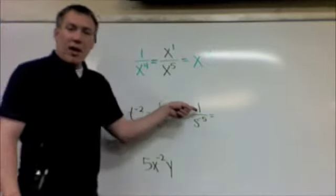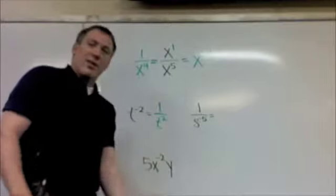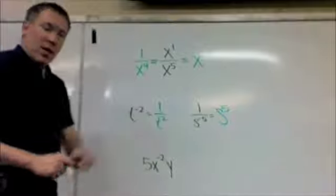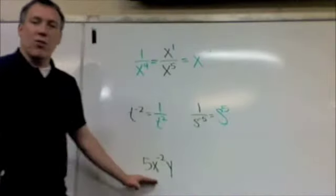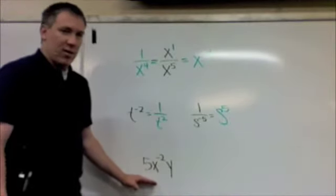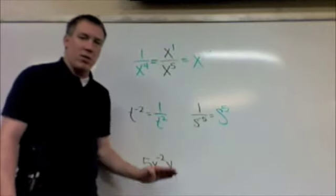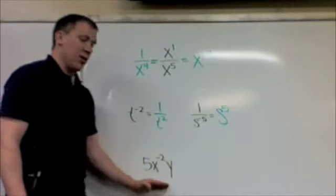One over s to the negative five. Now, let's go the other way. It's the same as s to the positive five. Okay, I want you to try this one. Rewrite this one. It's a little trickier. Using only positive exponents. Do not have any negative exponents in your answer.